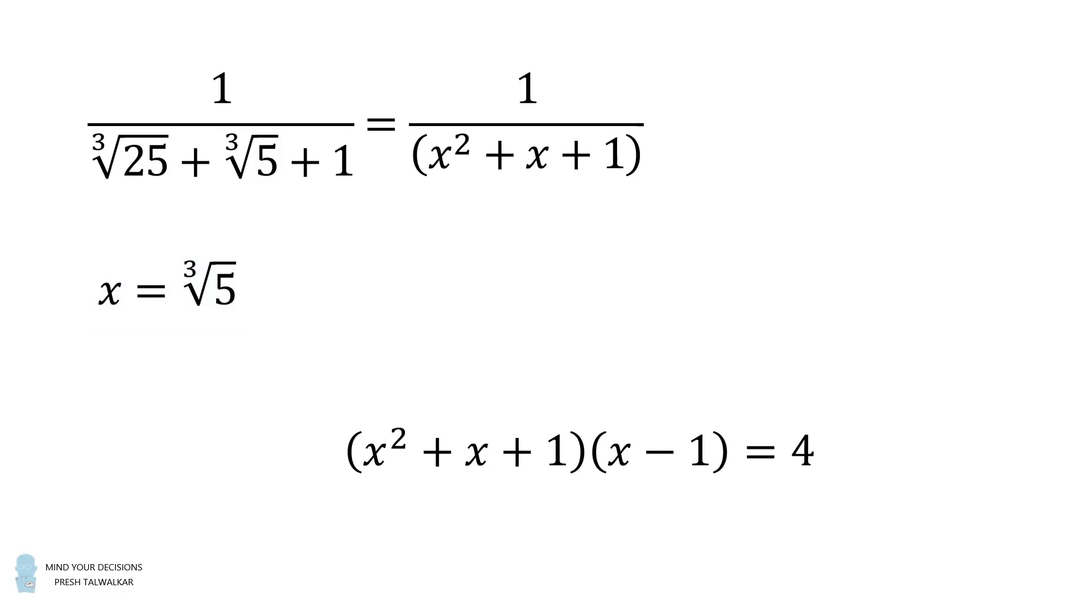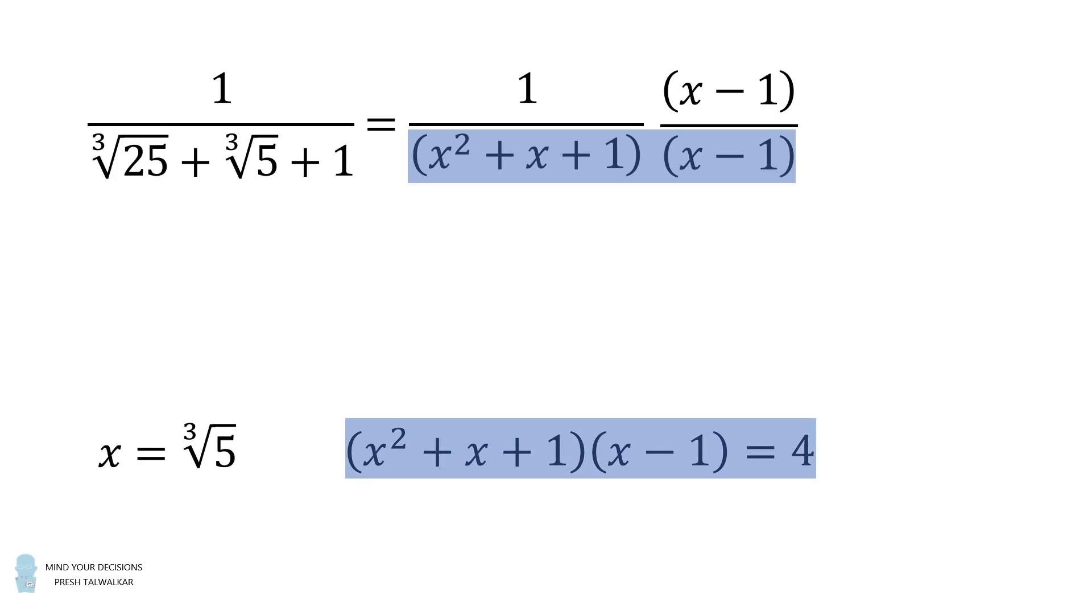From here, we can see that we can rationalize the denominator by multiplying the numerator and denominator by the factor x minus 1. This is the rationalizing factor. The denominator then is equal to 4, and the numerator is equal to x minus 1. So simplifying, we get x minus 1 all over 4.